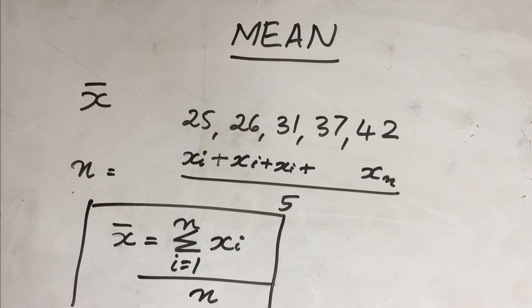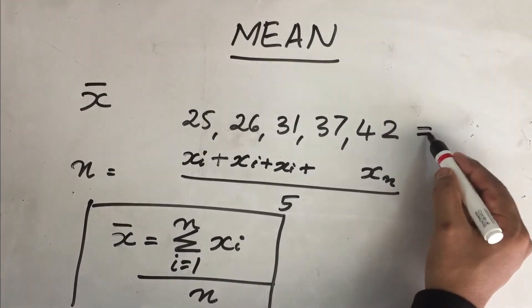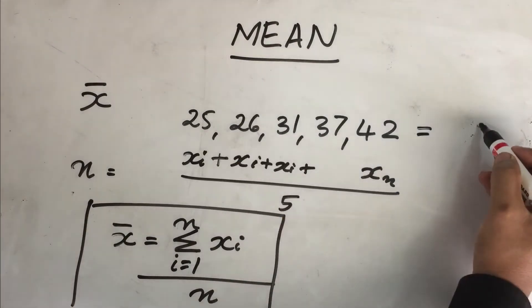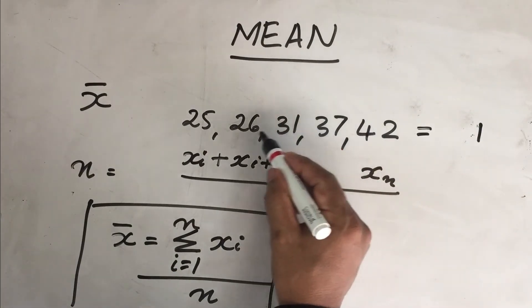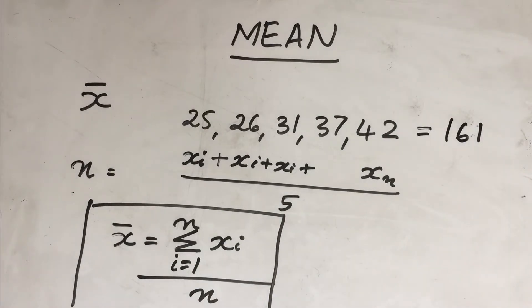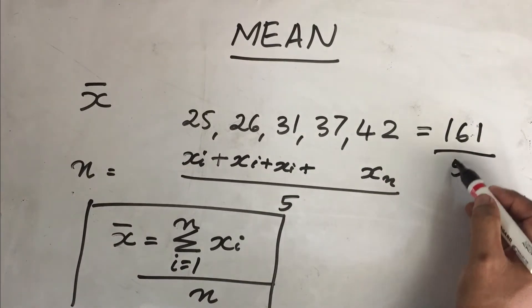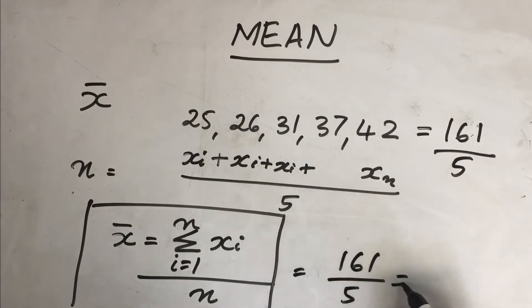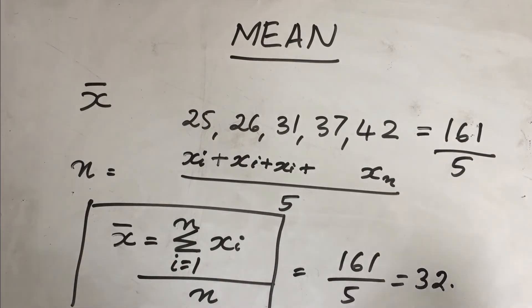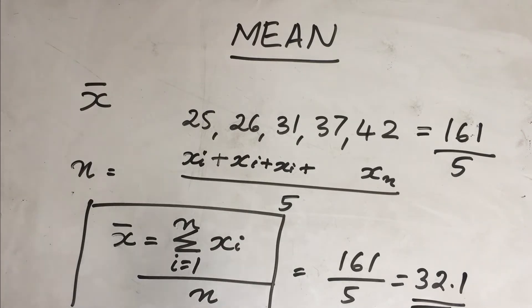This is the formula we use for calculating the mean of an ungrouped distribution. The summation of these values equals 161. So 161 divided by 5 gives us 32.1. This is the mean of the distribution, meaning the average marks a student has got is 32.1. This is how you find the mean of an ungrouped distribution.